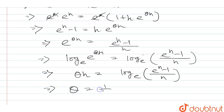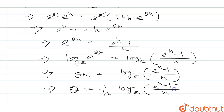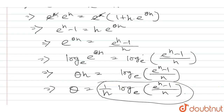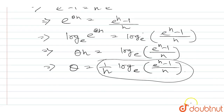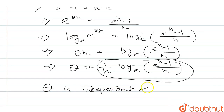Theta h equals 1 over h times log of e to the power of h minus 1 divided by h. So theta h value is e to the power of h minus 1 divided by h. Therefore, theta is independent of h.